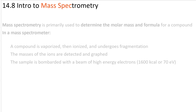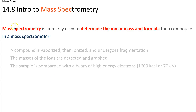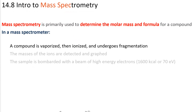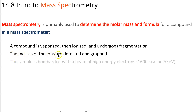Mass spectrometry. Mass spec can help you determine the molar mass and the chemical formula for a compound. Different mass spectrometers do this different ways, but in all of them they vaporize and then ionize the compound. Once it's ionized, it undergoes fragmentation. Some of the fragments are ions — the ion fragments are detected and graphed.